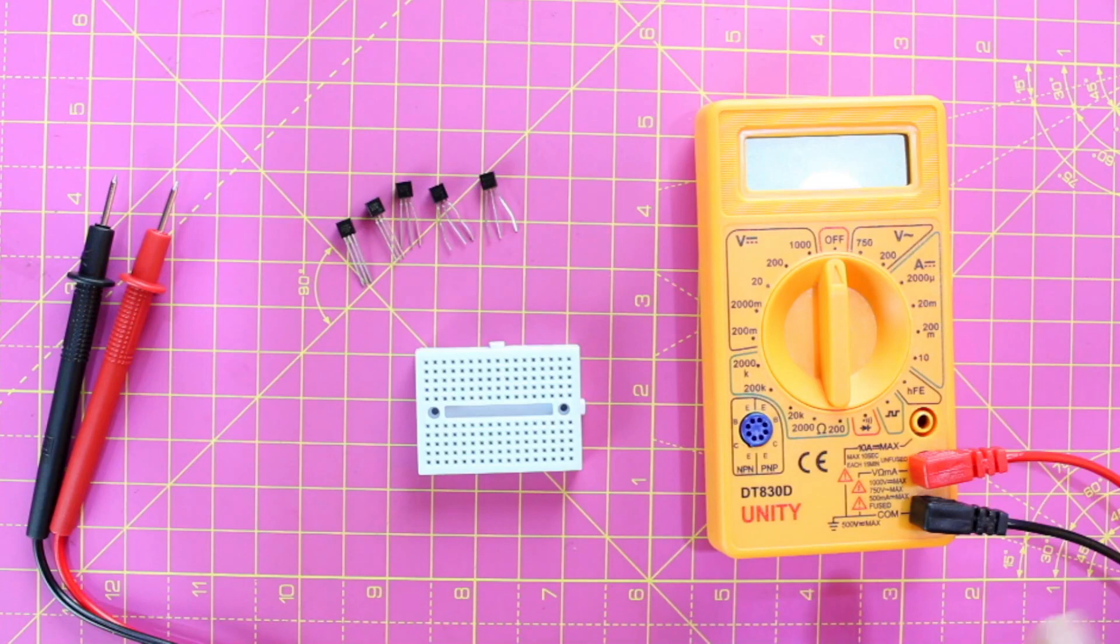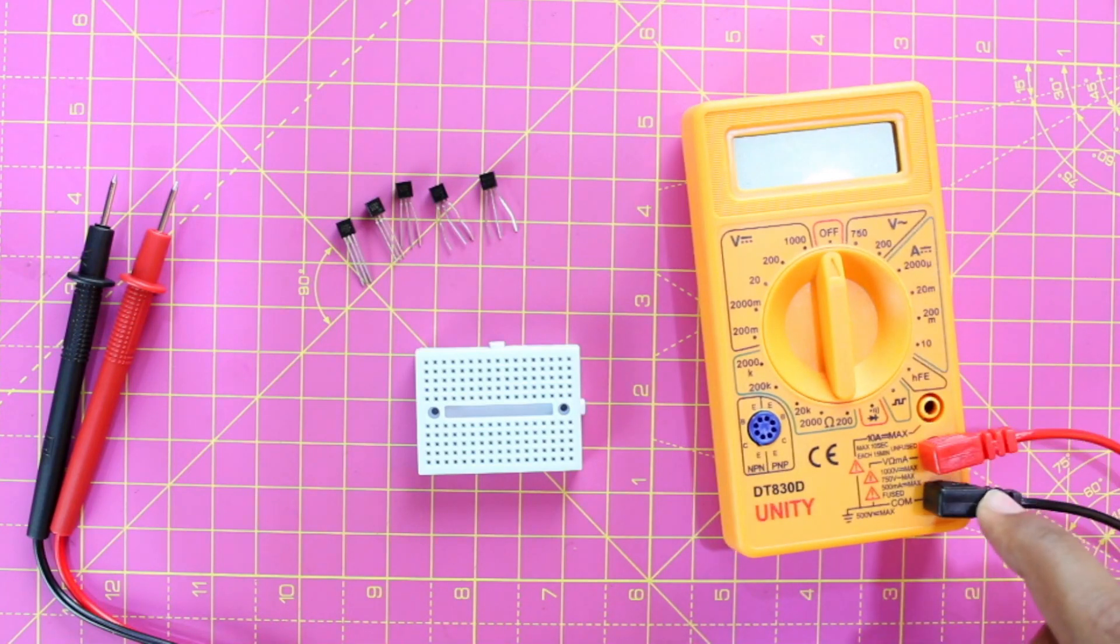Before you get started, make sure the black probe is placed on the COM port and the red probe is placed on V slash MA.